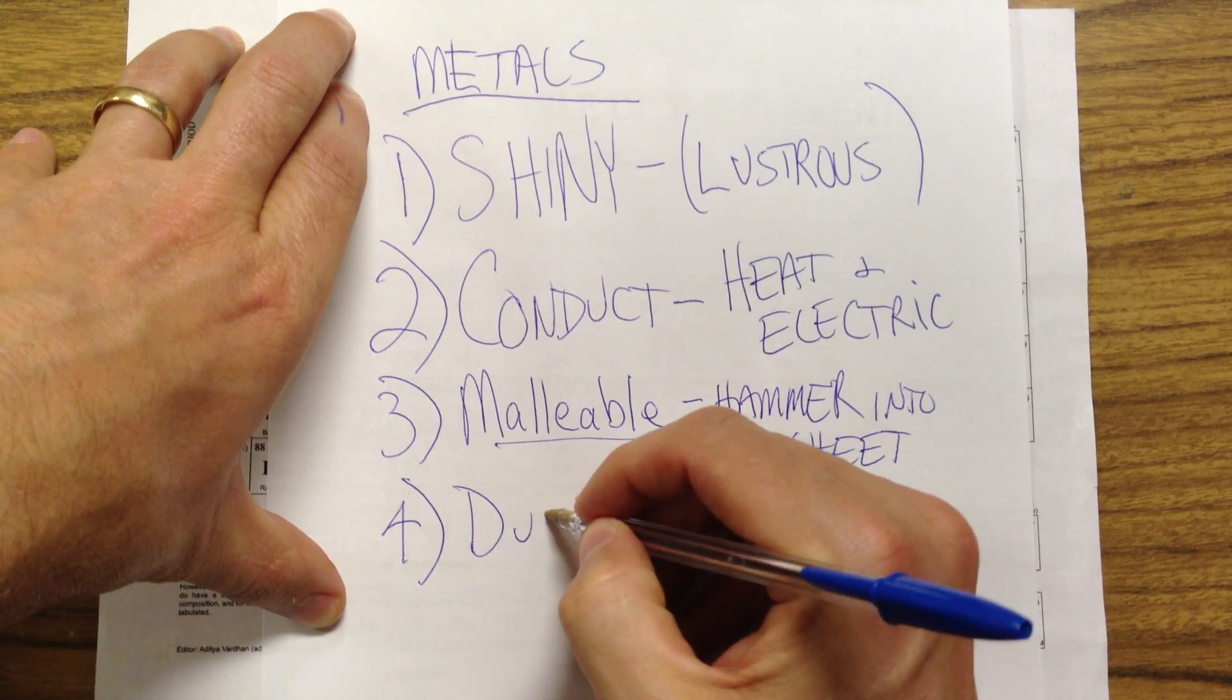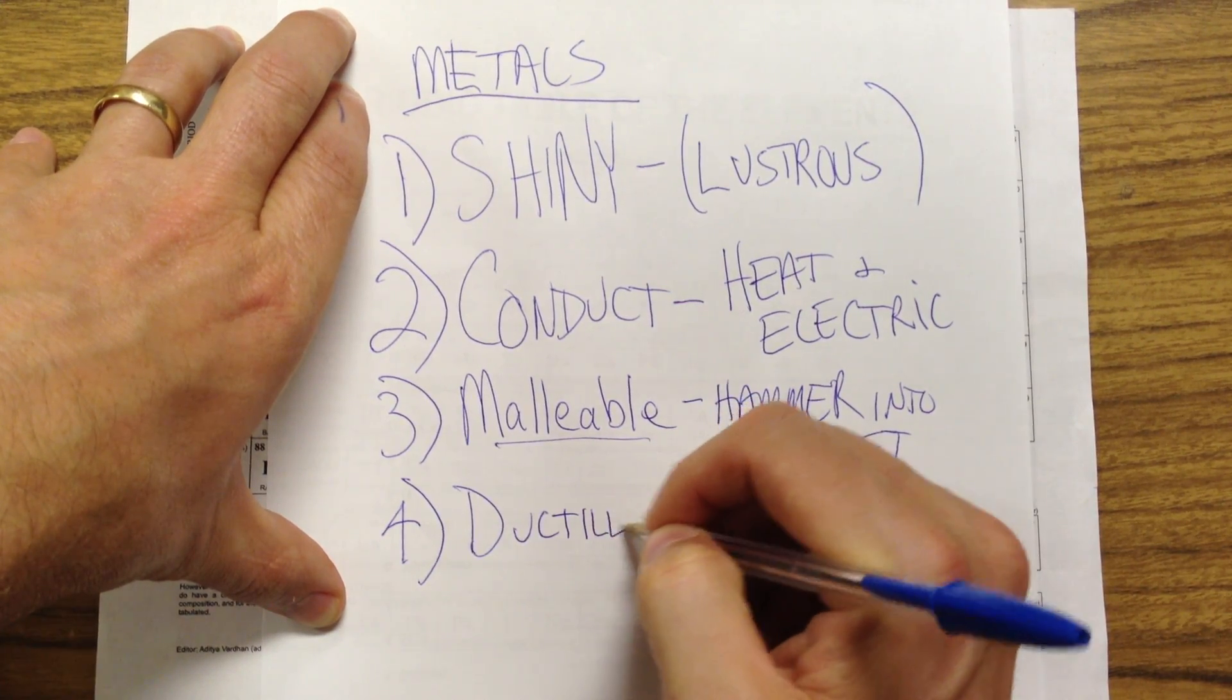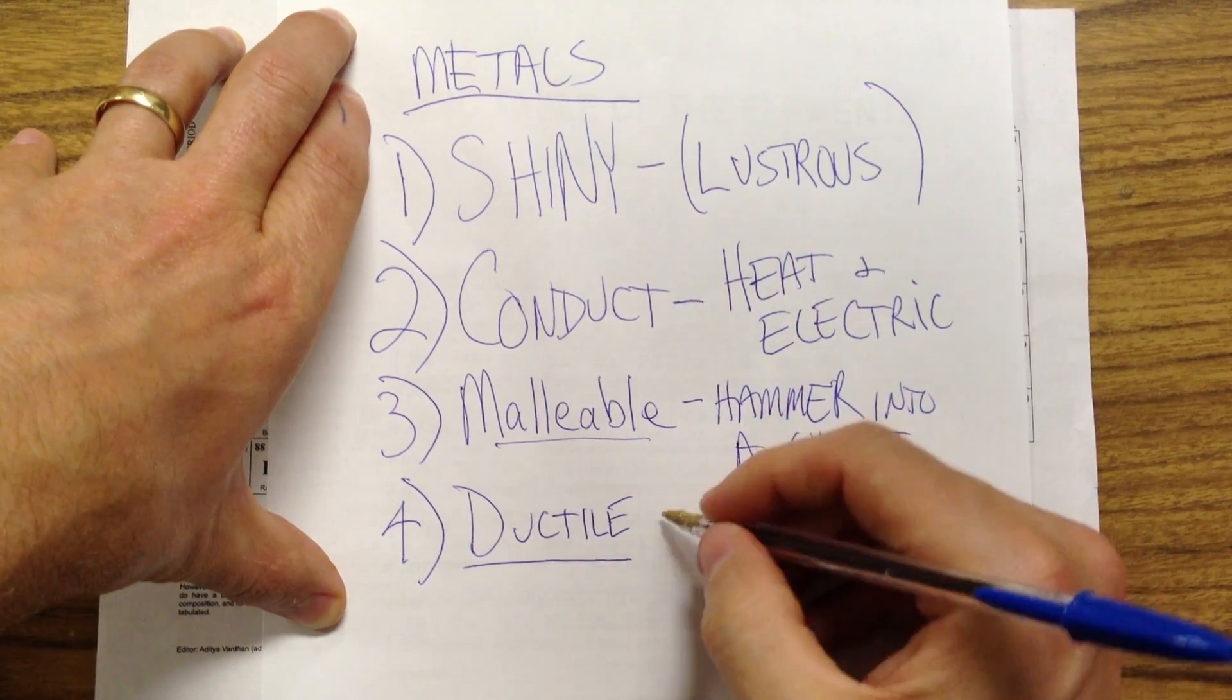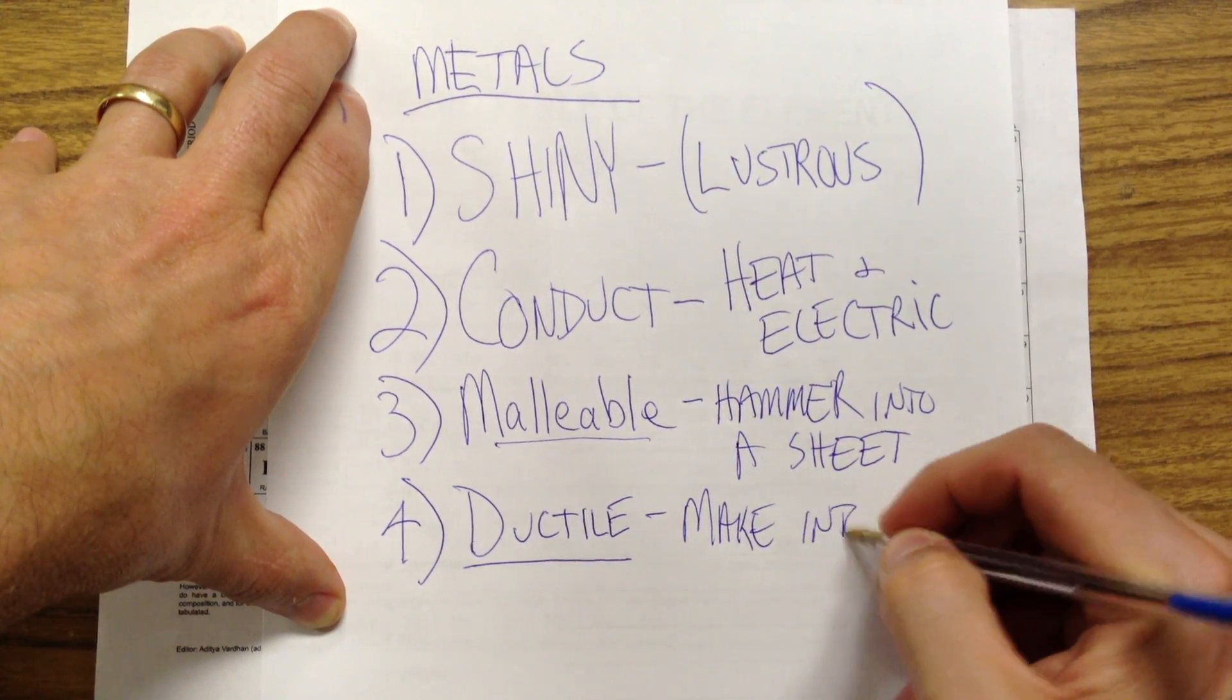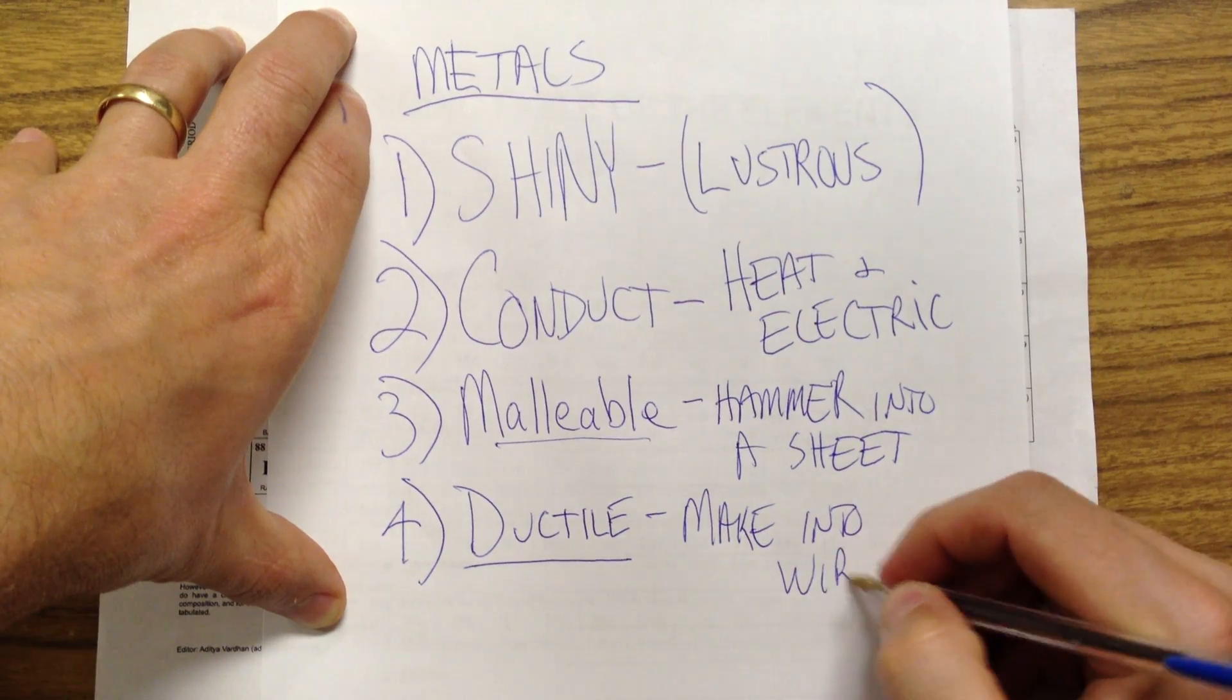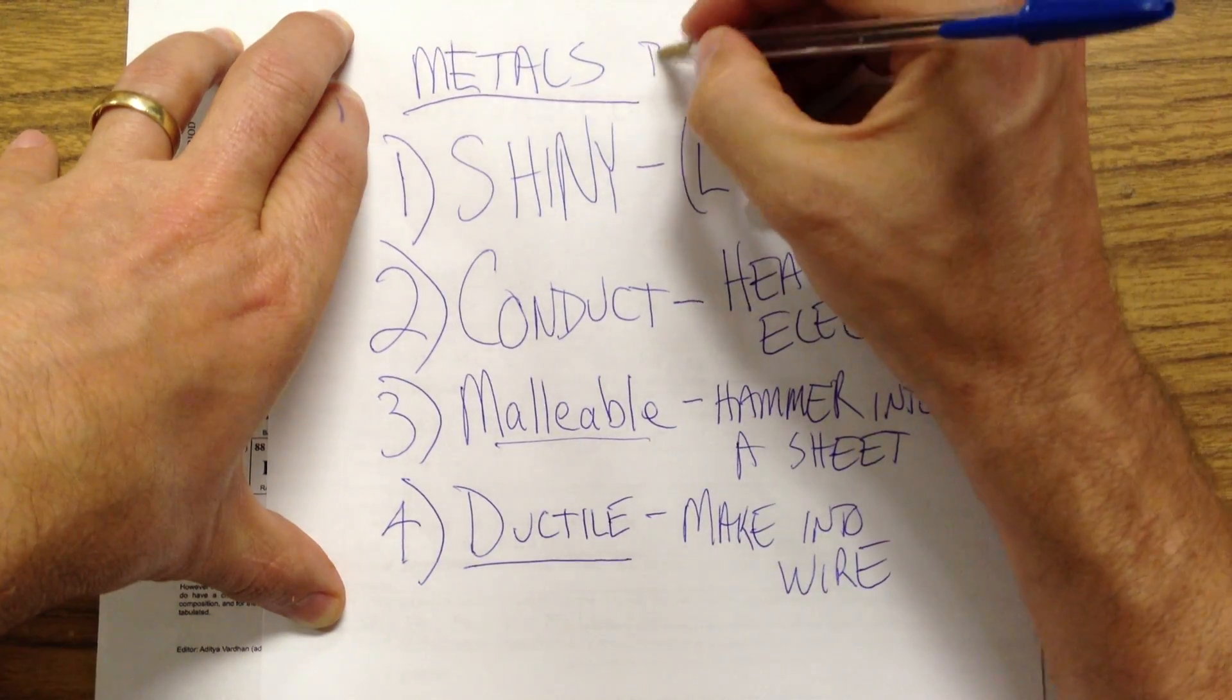And also, related to that, we say that they're ductile, which means you can make them into wire. So these are the physical properties of metals.